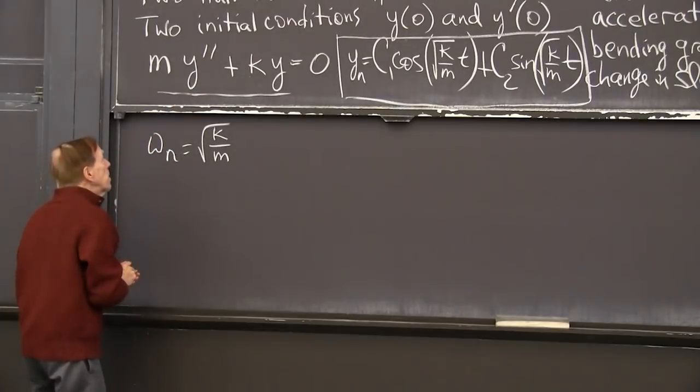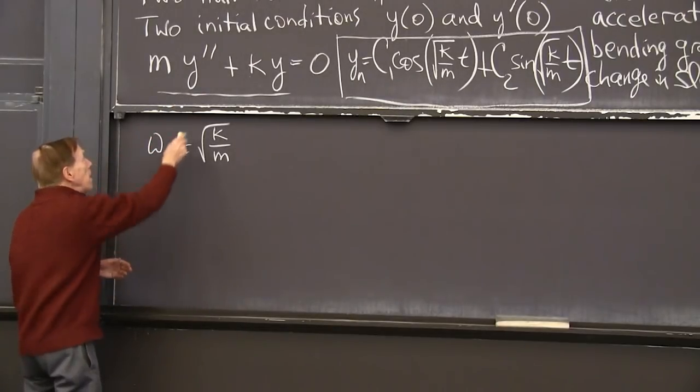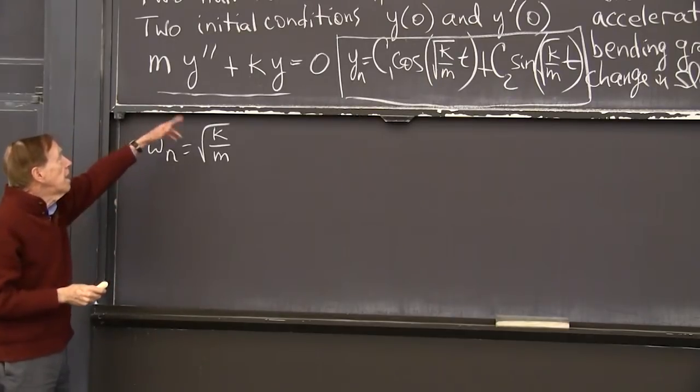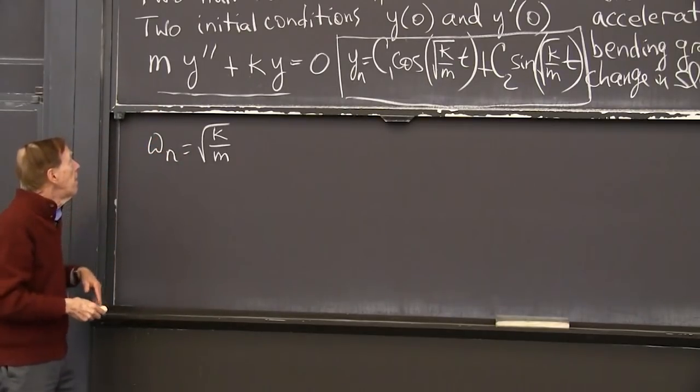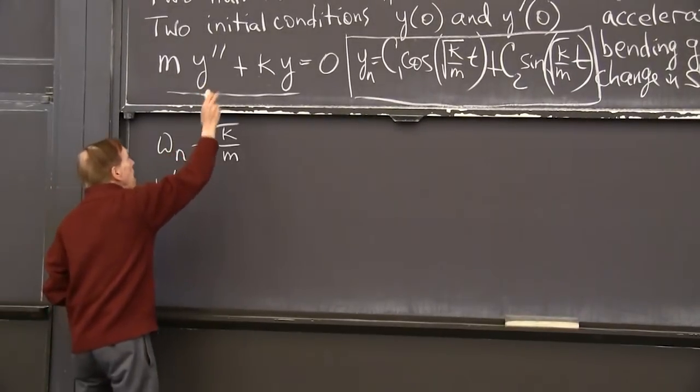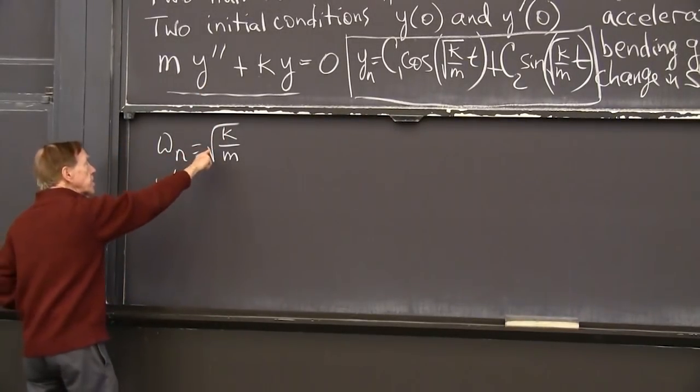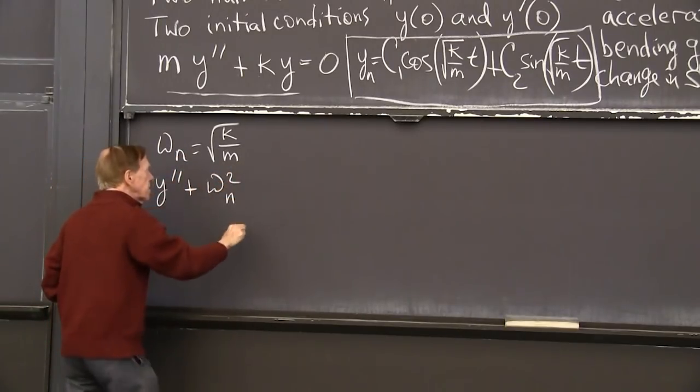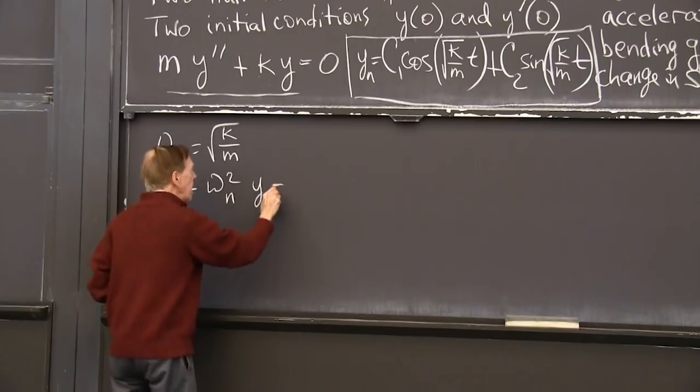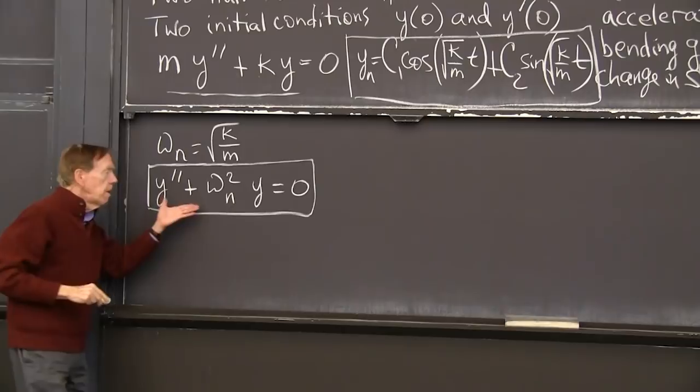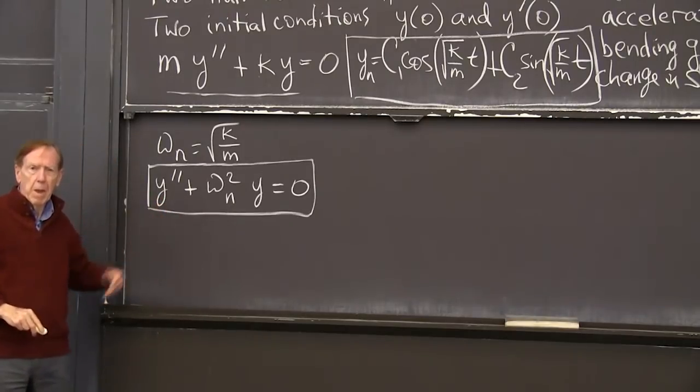So our equation, we could rewrite that equation. Let me rewrite that equation to make it simple. I'll divide by m. No problem to divide by m. So then I have y double prime plus k over m, which is omega_n squared. The natural frequency squared times y equals 0. Let's put a box around that one,